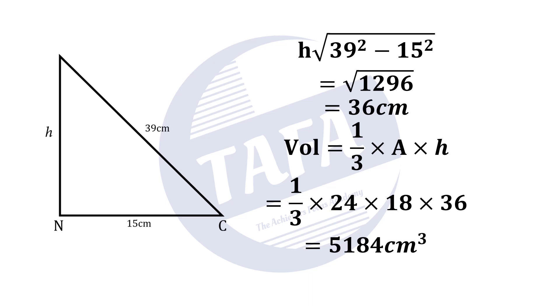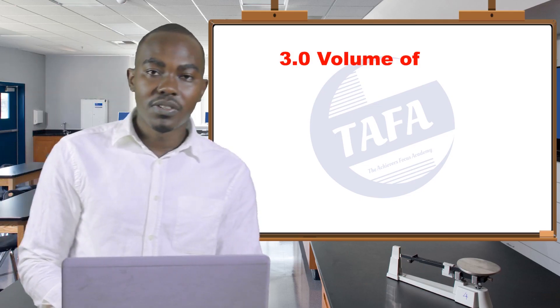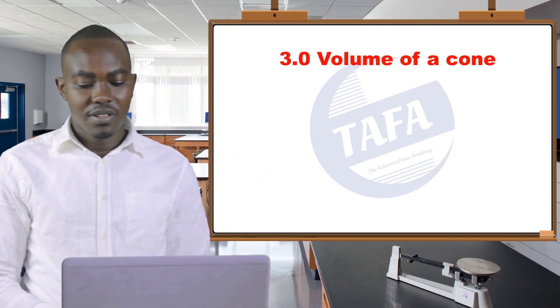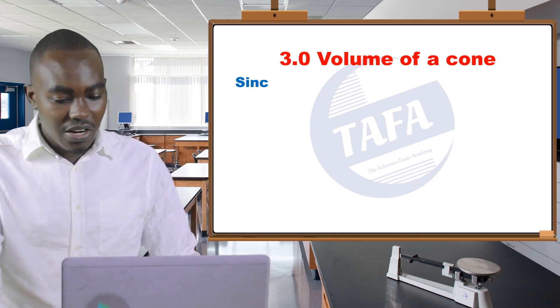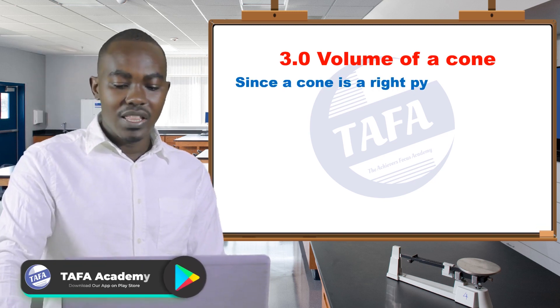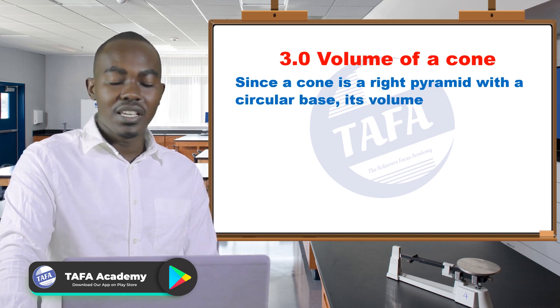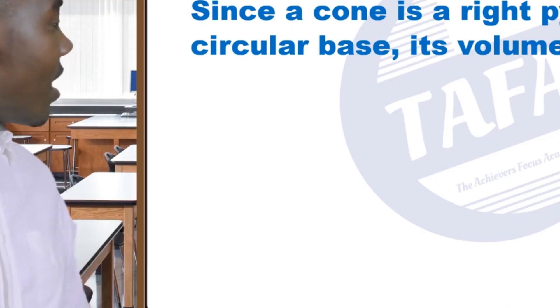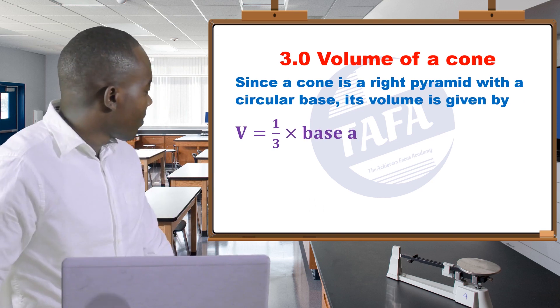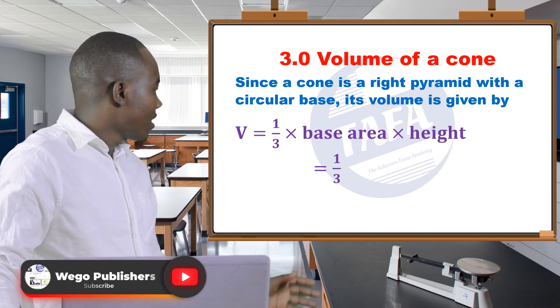Now we look at the volume of a cone. So a cone is a right pyramid with a circular base, and therefore its volume can be given by the same formula that we were using in finding the volume of a pyramid.